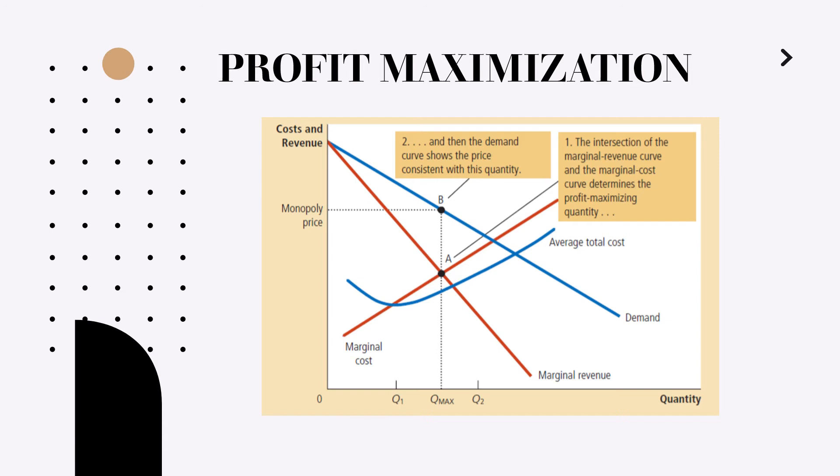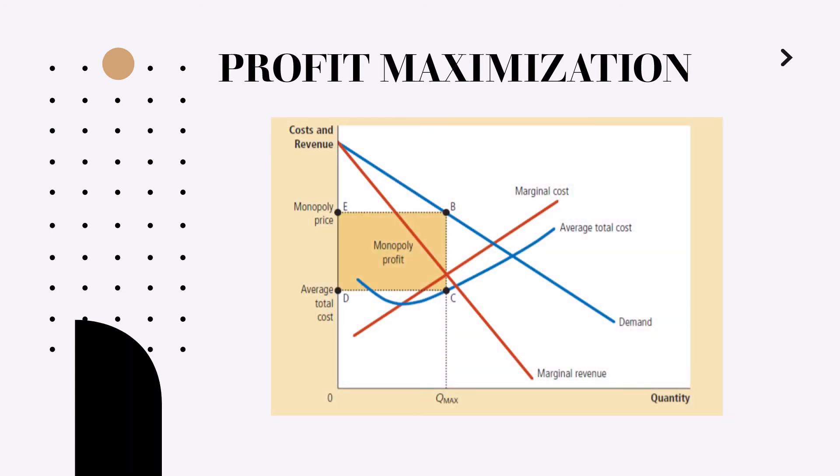However in this case we see that the price is different. And what happens? The monopoly basically generates a profit and the profit is represented by the box in our graph.